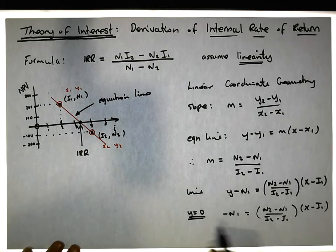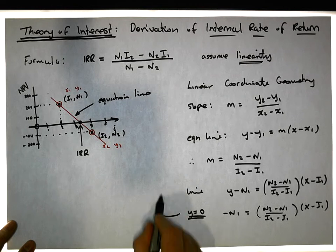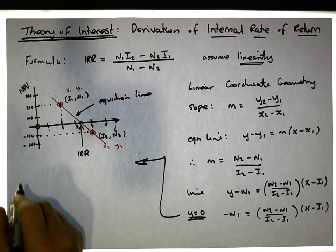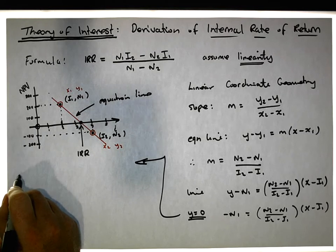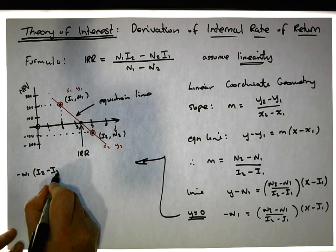We're going to cross multiply. Multiplying across by i2 minus i1 gives us minus n1 times i2 minus i1 must be equal to n2 minus n1 times x minus i1.